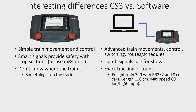The software might even know that the total length of the consist is, as an example, 118 centimeters. It knows the max speed and so on. You even have some software that will actually vary the acceleration and deceleration of the train and the train movement depending on how heavy the train is and whether or not it's loaded. The difference here from the Central Station 3 is that most software will actually calculate where the train is, while the CS3 really only understands simple train movement and sensors.